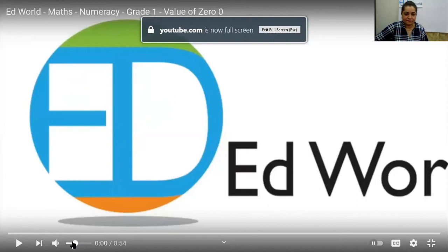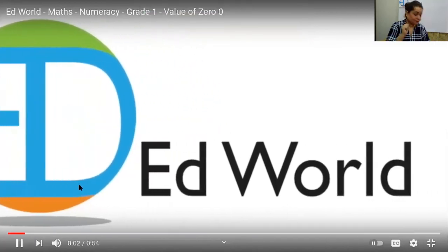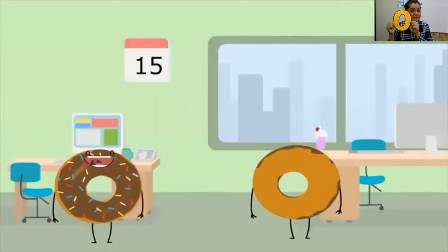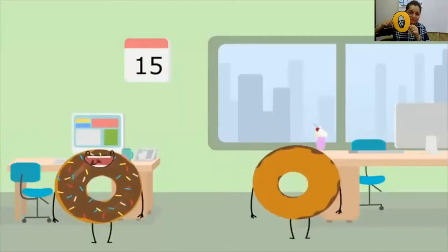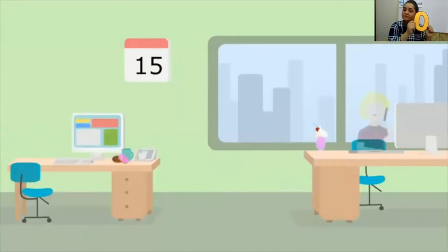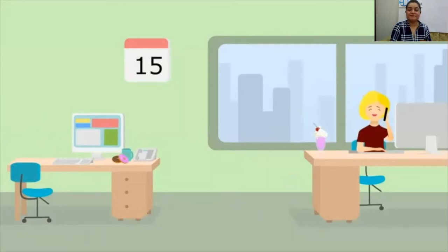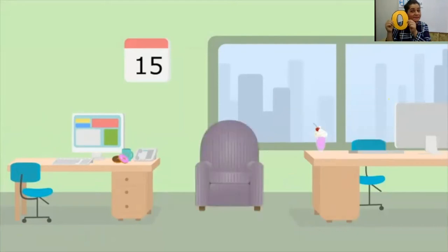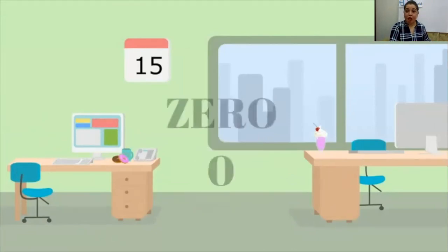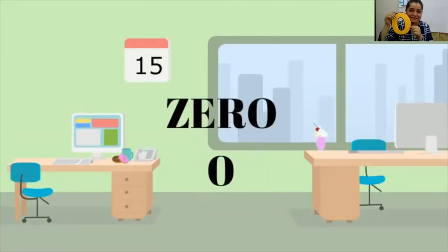I'm going to show you a video that will tell you a little more about zero. Let's watch it. Hello, look what we have here — we have two zeros. But even two zeros are equal to zero, so it's nothing. Like we have one person sitting at a table, but the other table is empty — zero persons there. Now we have no one there, zero. We have one sofa in the room, and now we have no sofas, so it's zero — no value, nothing, no substance.